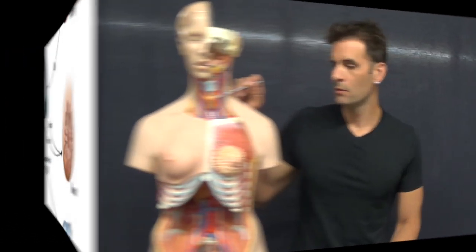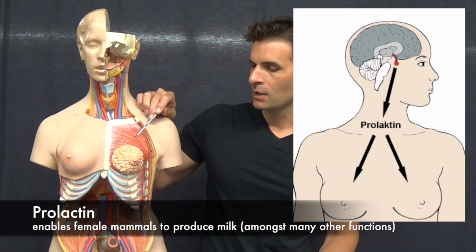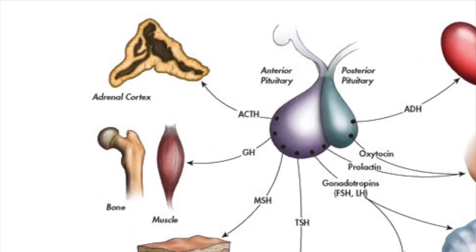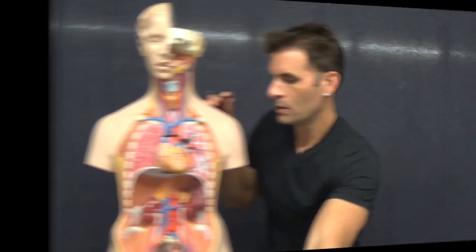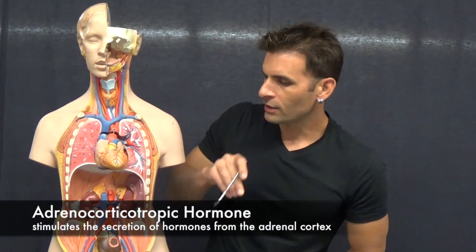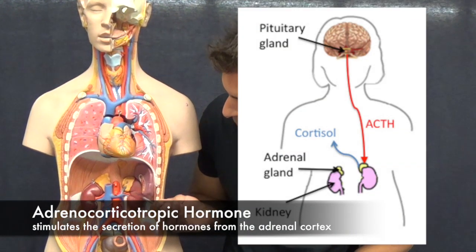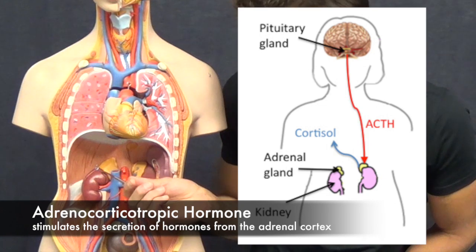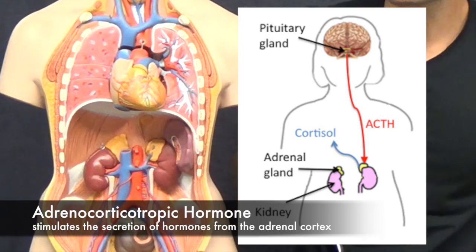Prolactin promotes milk secretion in mammary glands. Adrenal corticotropic hormone stimulates the adrenal cortex, which is located on the superior portion of the kidneys, to secrete its hormones.